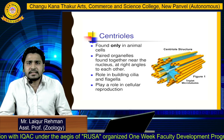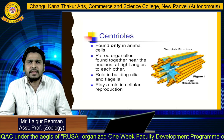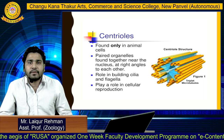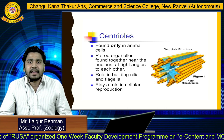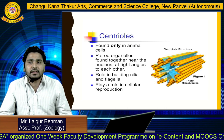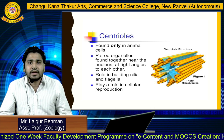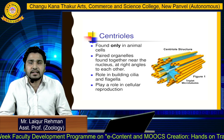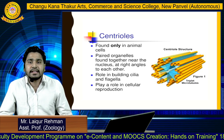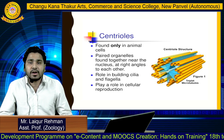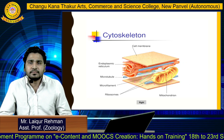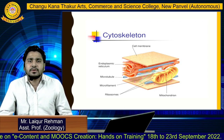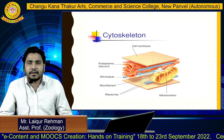The centriole is found only in animal cells. It is a paired organelle found together near the nucleus, positioned at right angles to each other. Centrioles help in building cilia and flagella, and they also play a role in cellular reproduction.